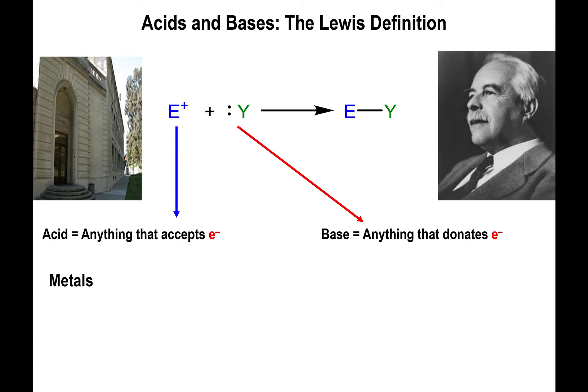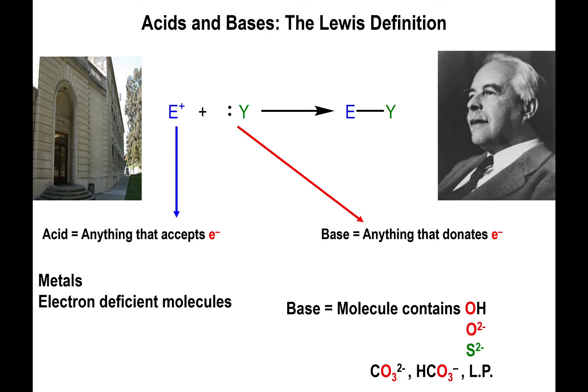Specifically for the acids, not only do you have substances that have H's being acids, but metals can now behave as potential acids, and molecules that have electron deficiency like boron can also behave as acids. For the bases, you still encompass everything that the Brønsted-Lowry definition included — anything that has lone pairs of electrons ready to be donated. But anything being donated in terms of electrons to metals or anything else other than H can still be considered a base. We actually extend the scope quite vastly, probably to the full extent, by looking at it from the Lewis definition.